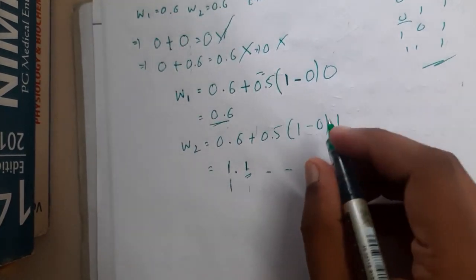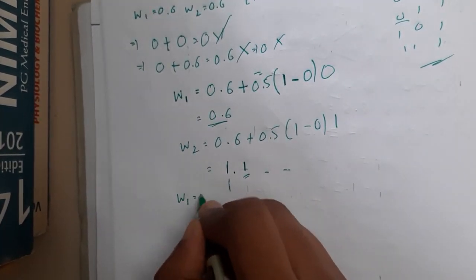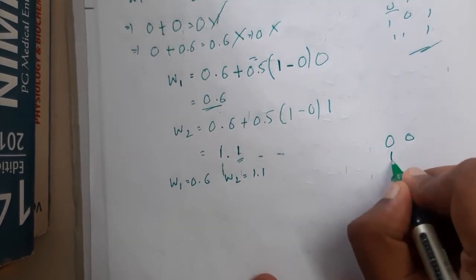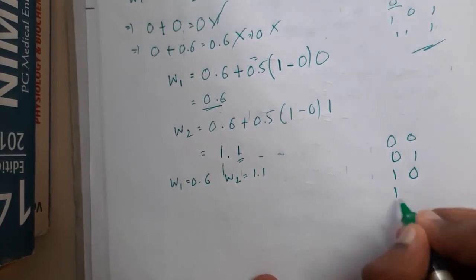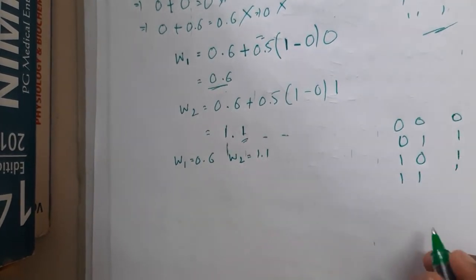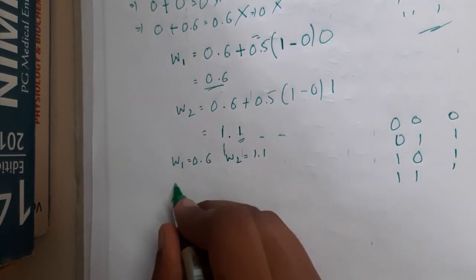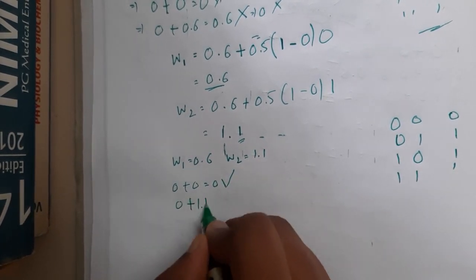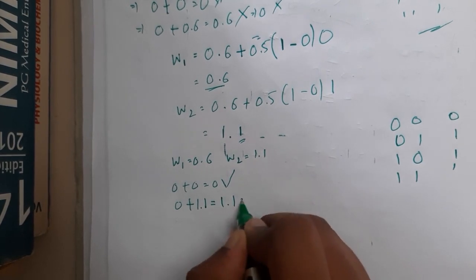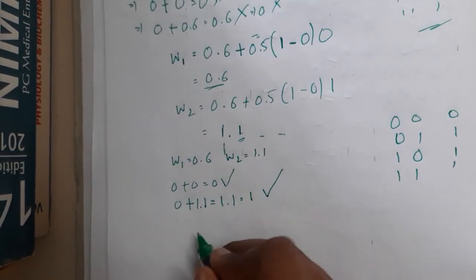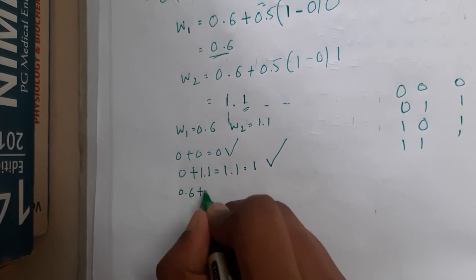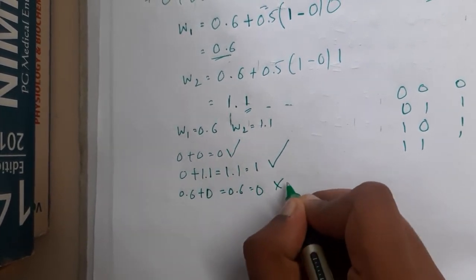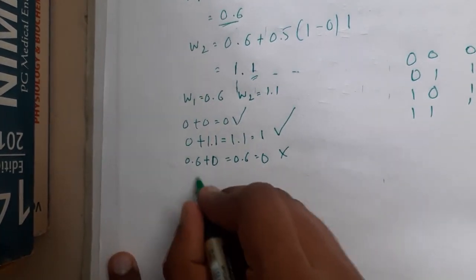Now your new weights are w1 equals 0.6 and w2 equals 1.1. Let us redraw the table again because I don't want to get confused. So 0 times 0 plus 0 equals 0, matched. 0 plus 1.1 equals 1.1, which is 1, and it also passed. Now 0.6 plus 0 equals 0.6; we are getting 0 but we need 1, so again it has failed.